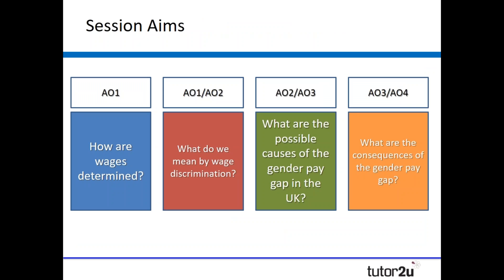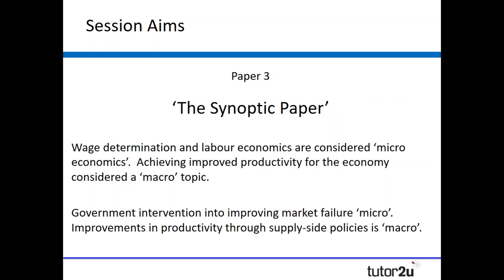We're going to be thinking primarily today about wage discrimination for gender and the gender pay gap in the UK. We'll have a quick discussion about how wages are determined, what we mean by wage discrimination and ultimately what are the consequences of that gender pay gap. Another reason why we're thinking about this topic is because it could turn up in that paper three synoptic paper, on the basis that whilst labour economics and wage determination is primarily a micro topic, the fact that we may want our workers to be more effective and efficient could be seen as a supply side policy and therefore macro.